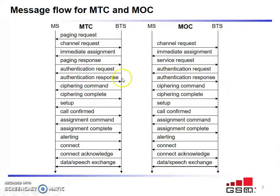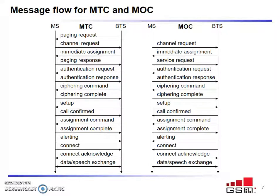Moving to MOC. A channel request is given by the mobile station to the BTS, and an immediate assignment is given by BTS. A service request is given by MSC, an authentication request is given by BTS, and a response is received. A ciphering command is initiated by BTS and completed by the mobile station. A setup is initiated by the mobile station and the call is confirmed by BTS. Assignment command is initiated by BTS and completed by the mobile station. Alerting and connection are done by BTS, the connection is established, and an acknowledgement is given by the mobile station. Finally, data or speech exchange is done between MSC and BTS.